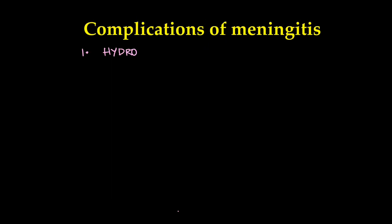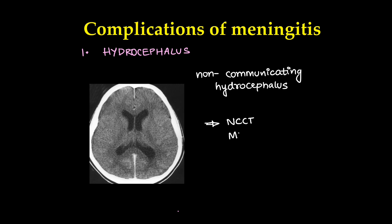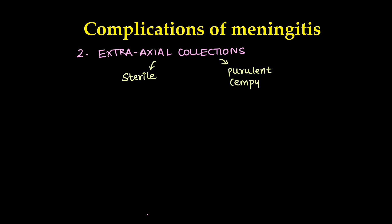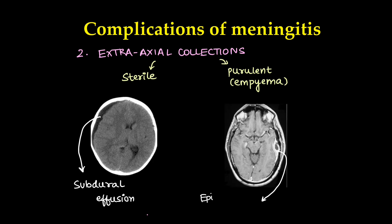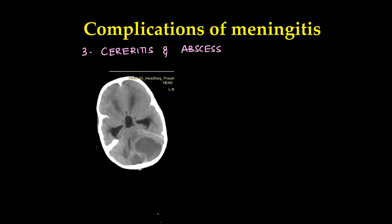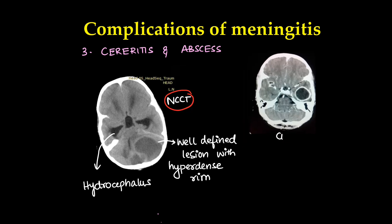Complications of meningitis include: first, hydrocephalus — usually non-communicating or obstructive — seen on NCCT, CECT, and MRI. Extraaxial collections can be either sterile, such as subdural effusions, or purulent (empyema), such as epidural or subdural abscesses, seen on CT and MRI. Cerebritis and abscess formation in the parenchyma can also occur, seen on non-contrast CT as a well-defined lesion with a hyperdense rim, with associated hydrocephalus.